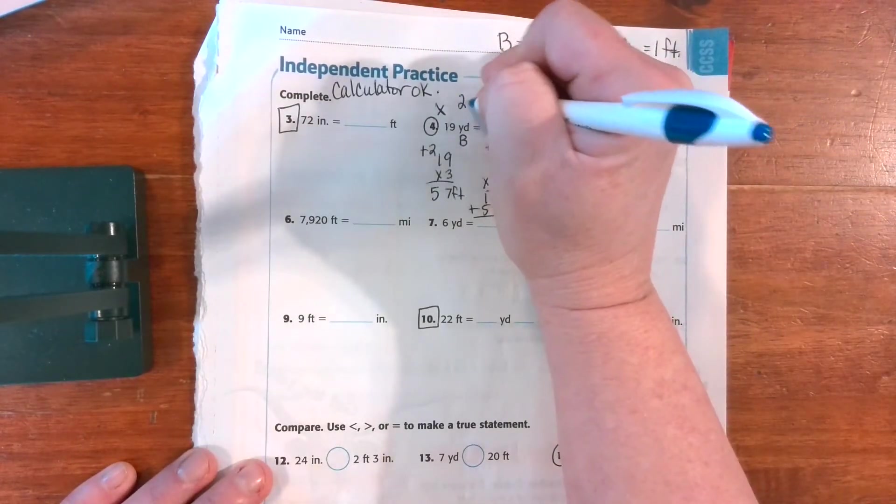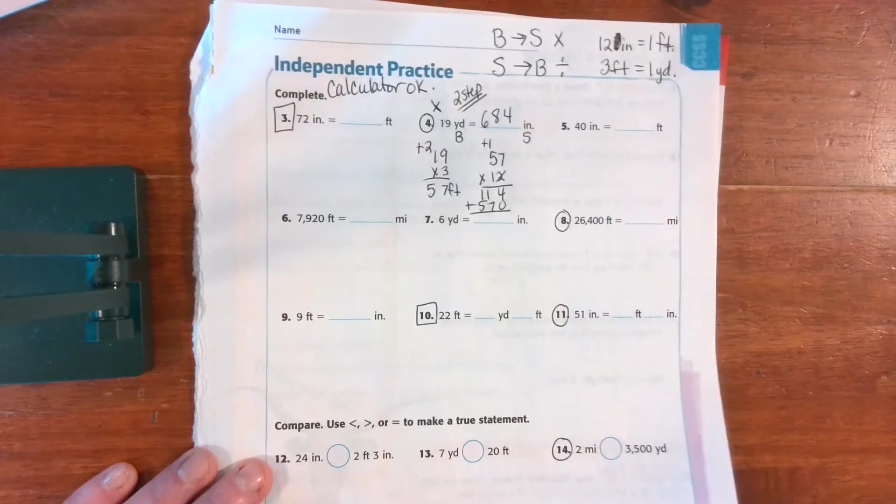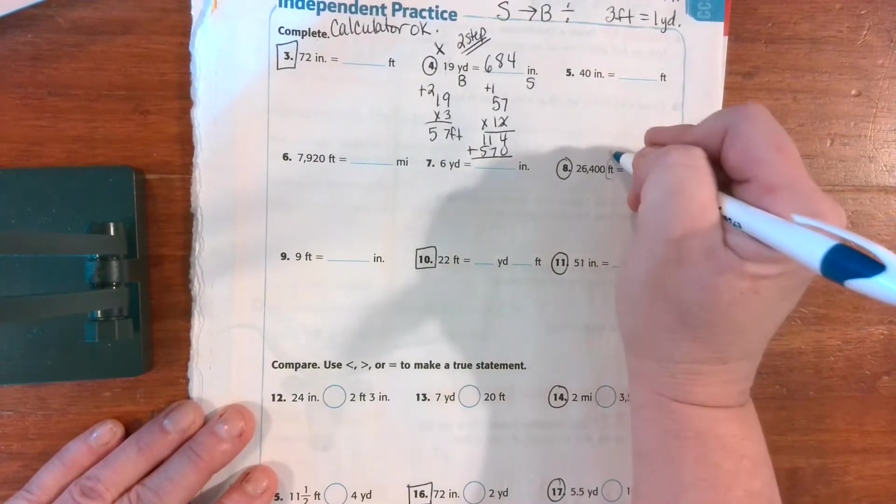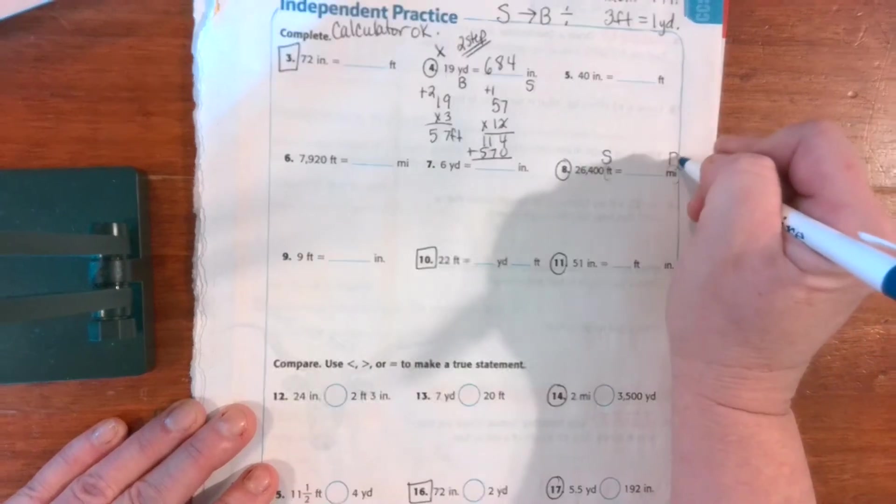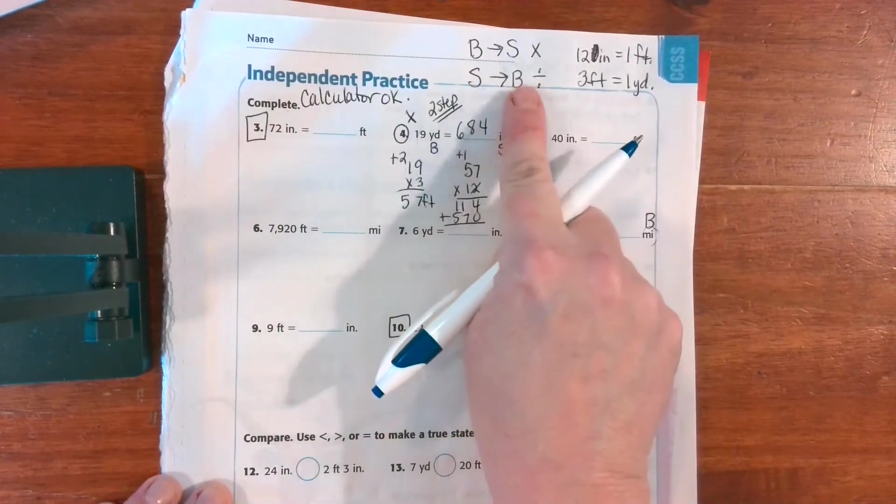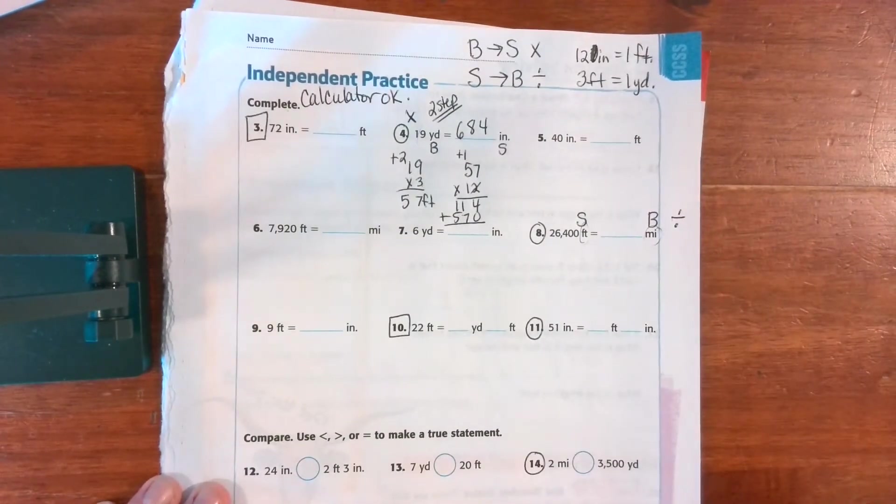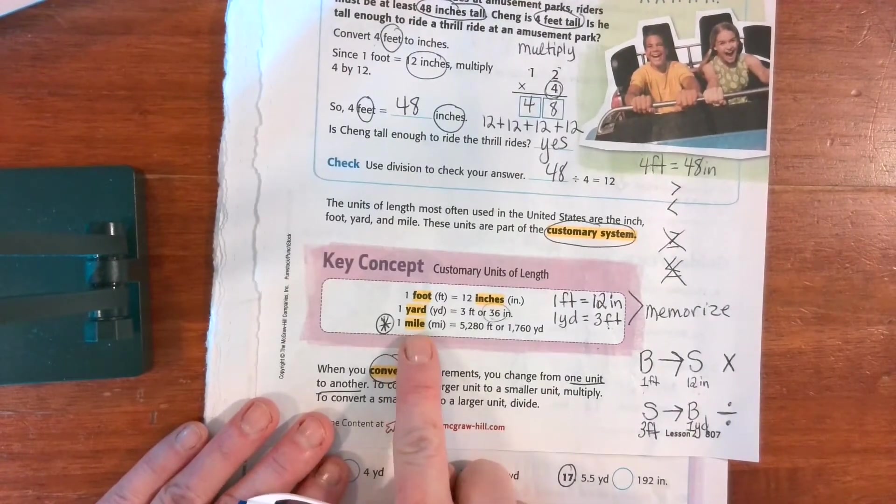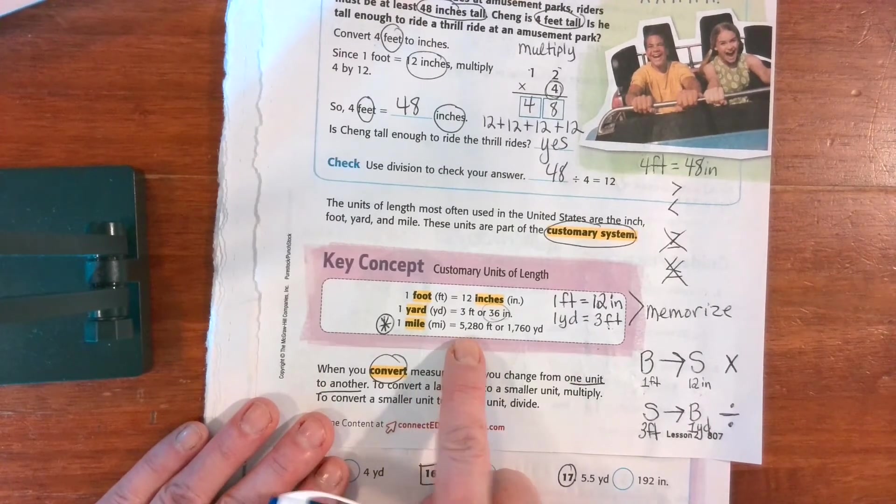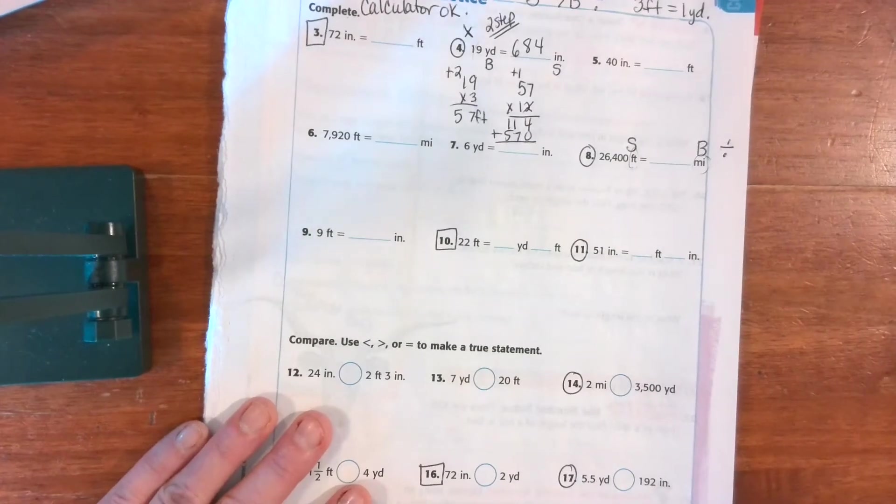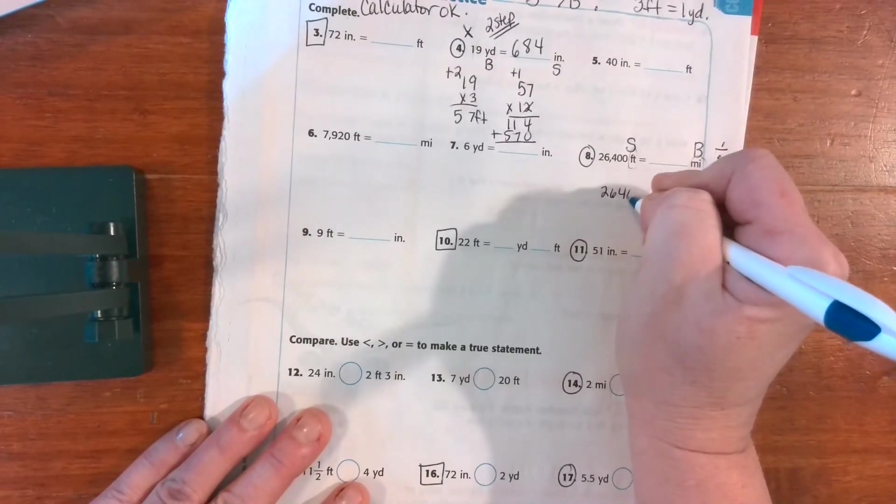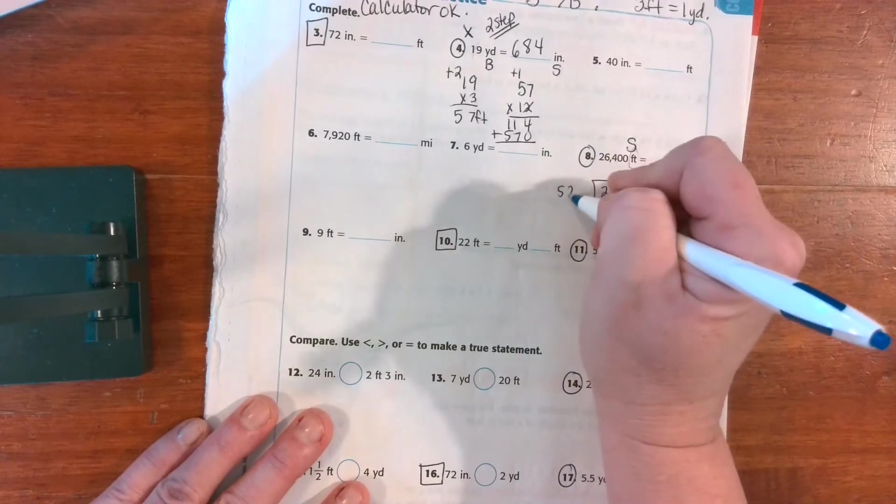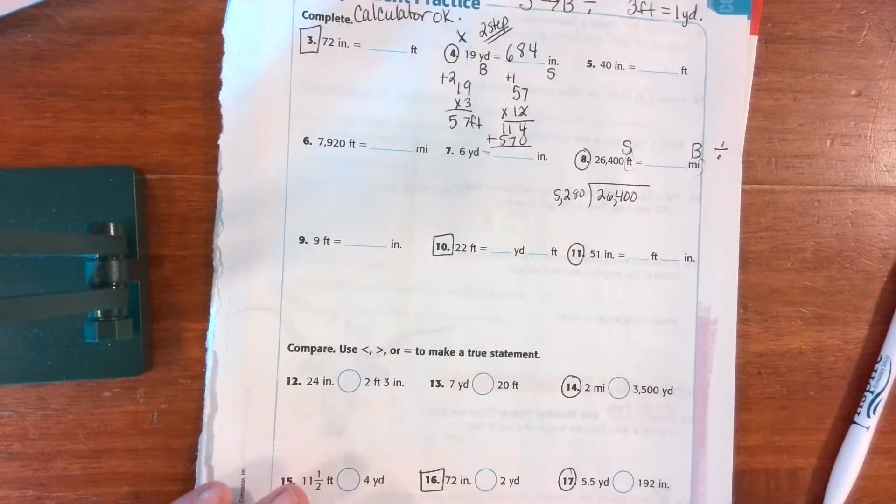All right, we're going to go feet to miles. Feet are going to be smaller and miles are going to be bigger. So if I'm going from a small to a big, I divide. All right, so now I'm going to look because I don't know feet to miles. And I'm going to see that it says for every one mile there are 5,280 feet. So I'm going to do 2,640 divided by 5,280. Now we could use our partial quotients.